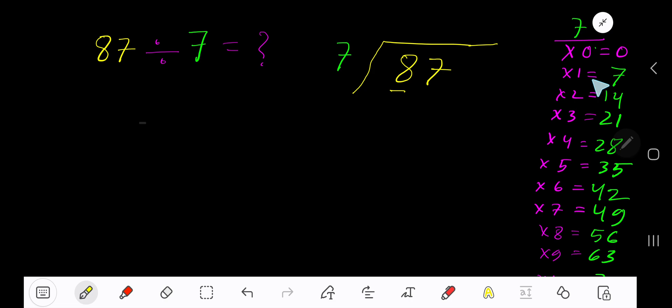1 time. 1 times 7 is 7. Subtract and bring down the next digit to get 17. 7 goes into 17 how many times? 2 times. 2 times 7 is 14.